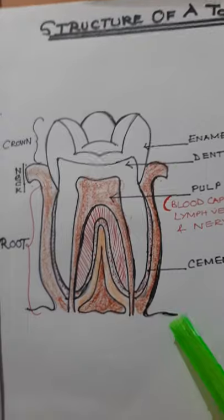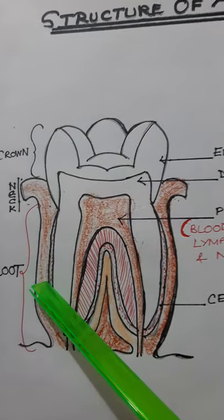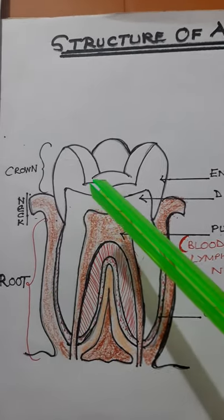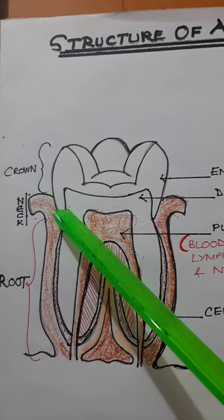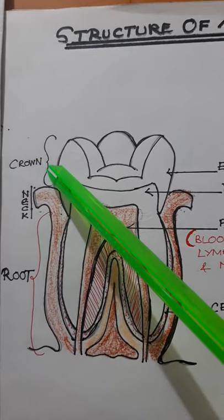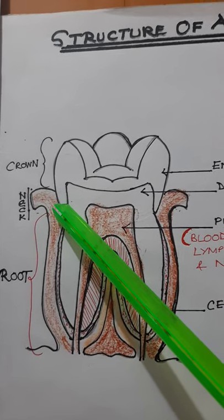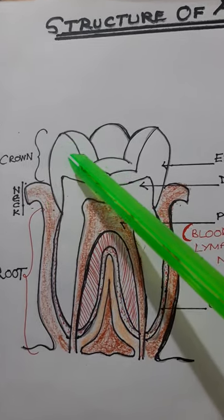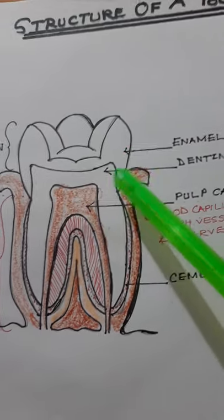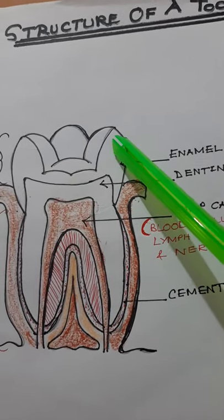Now coming to the structure of the tooth: in between the crown and the root there is a narrow structure — like a junction — that is called the neck. The crown is the part which is exposed above the gums.